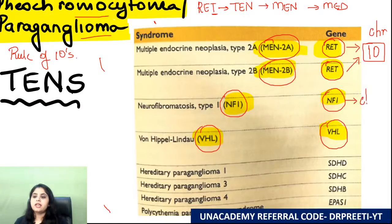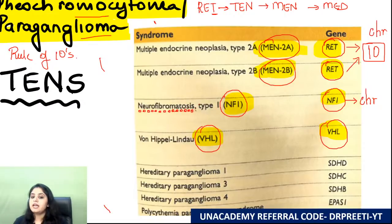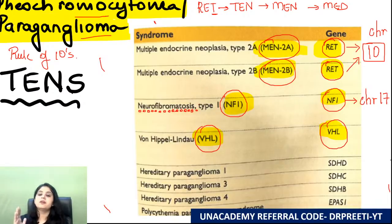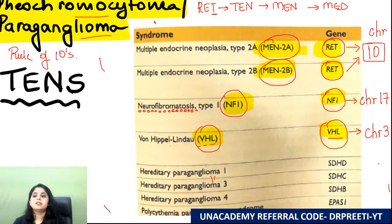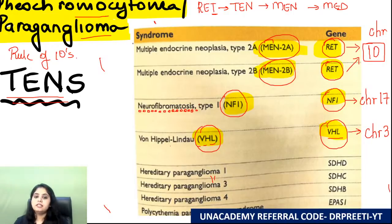NF1 gene (neurofibromatosis type 1): count the letters in 'neurofibromatosis' — 17 letters, so chromosome 17. VHL gene (von Hippel-Lindau): three letters = chromosome 3. Summary: chromosome 10 = RET, chromosome 17 = NF1, chromosome 3 = VHL. All three syndromes are associated with pheochromocytoma and paraganglioma.